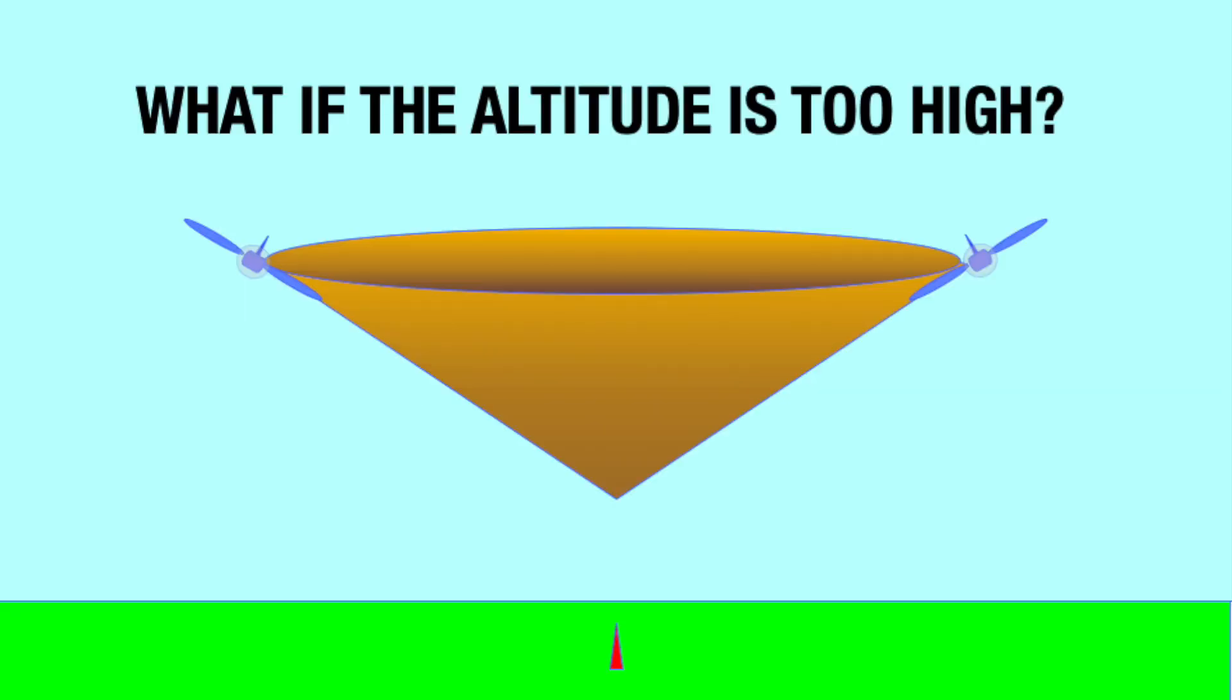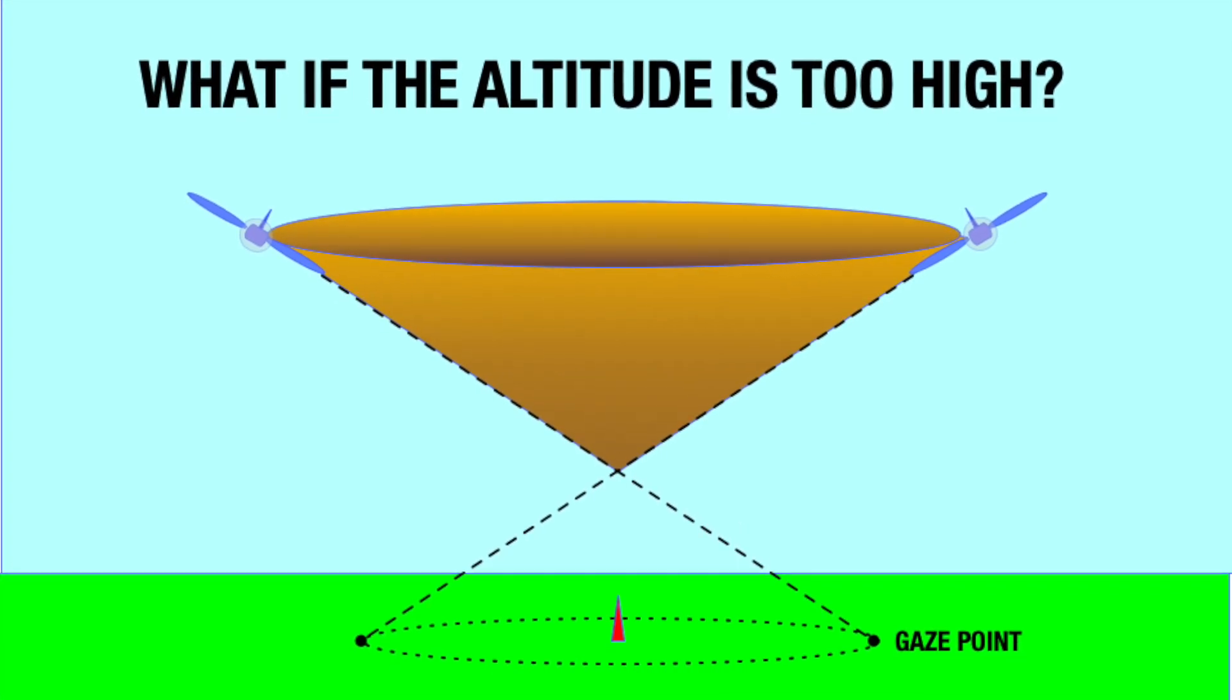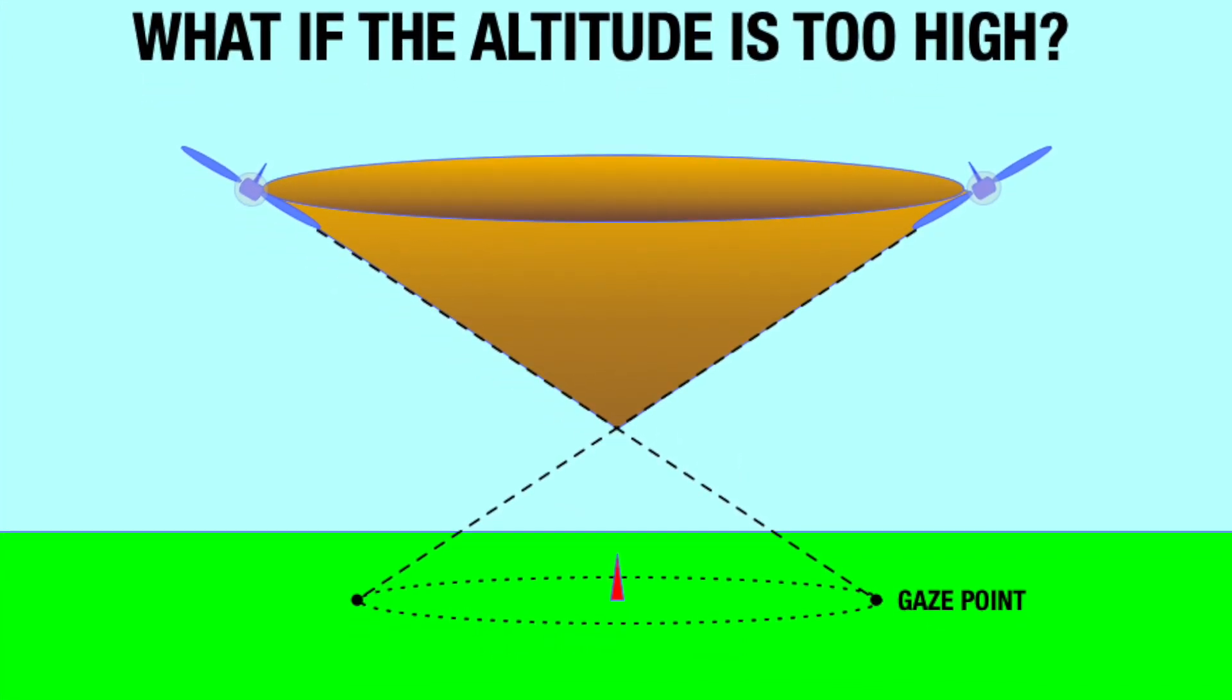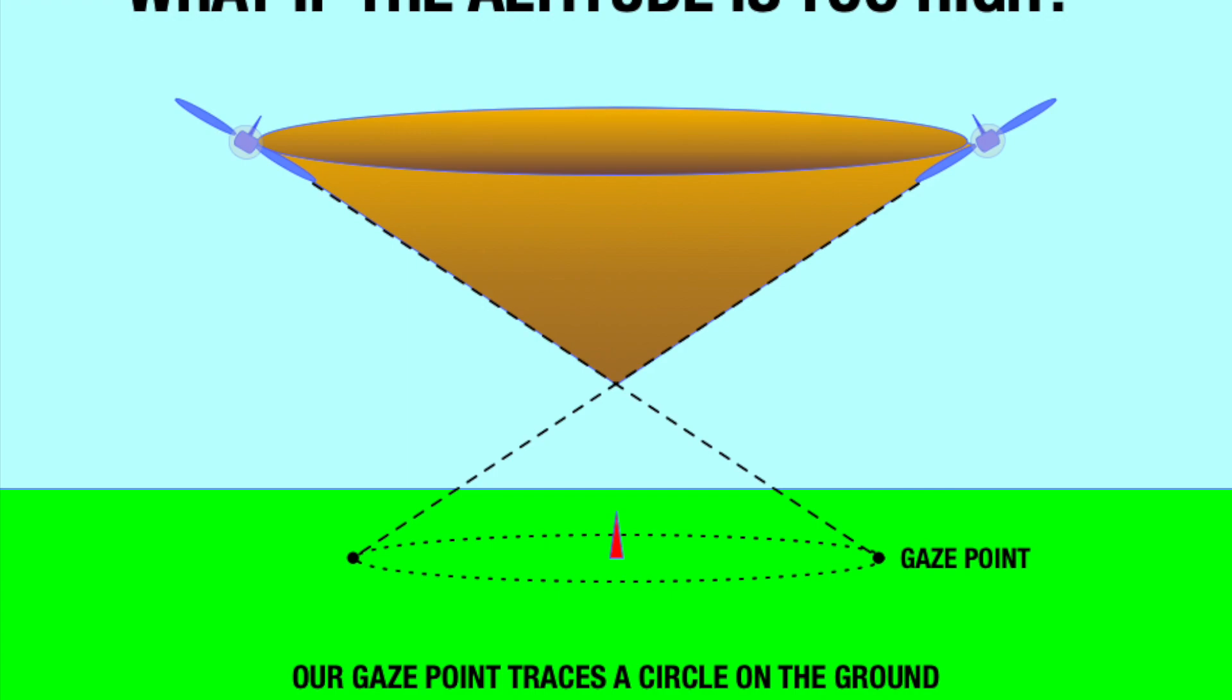If the airplane is above pivotal altitude, the gaze point still traces out a circle, but the gaze point is on the other side of the pylon. The gaze point seems to recede behind the pylon, or alternatively the pylon seems to advance.